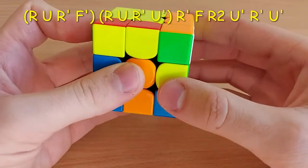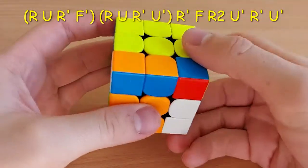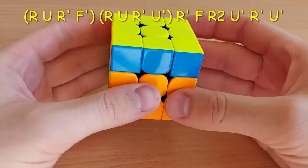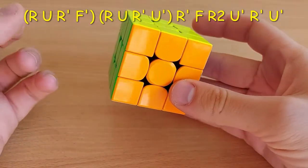So sexy move, R prime, F, R2, U prime, R prime, and U prime as AUF.